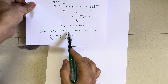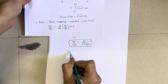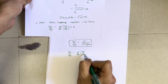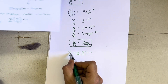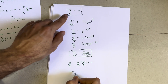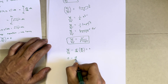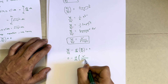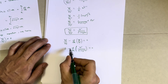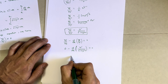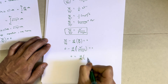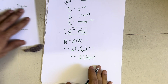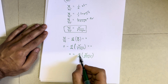Now substituting into the Euler-Lagrange equation: ∂f/∂y − d/dx(∂f/∂y') = 0 becomes 0 − d/dx[y' / √(1 + y'²)] = 0, so d/dx[y' / √(1 + y'²)] = 0. This is now a full differentiation with respect to x, not partial.